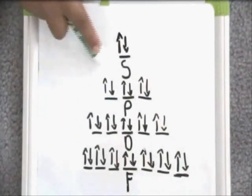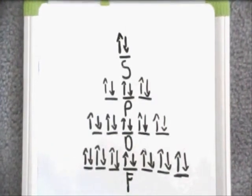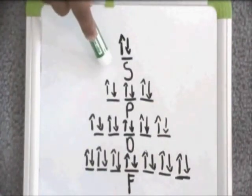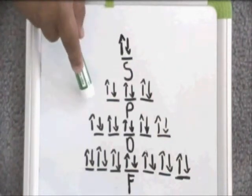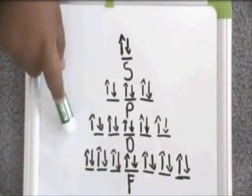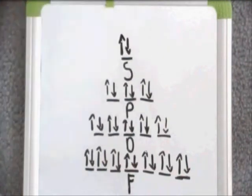These orbitals are represented by the vertical line. Each orbital can only have two electrons. Sub-level S has 2 electrons, sub-level P has 6, sub-level D has 10, and sub-level F has 14. These electrons are represented by the up and down arrows.